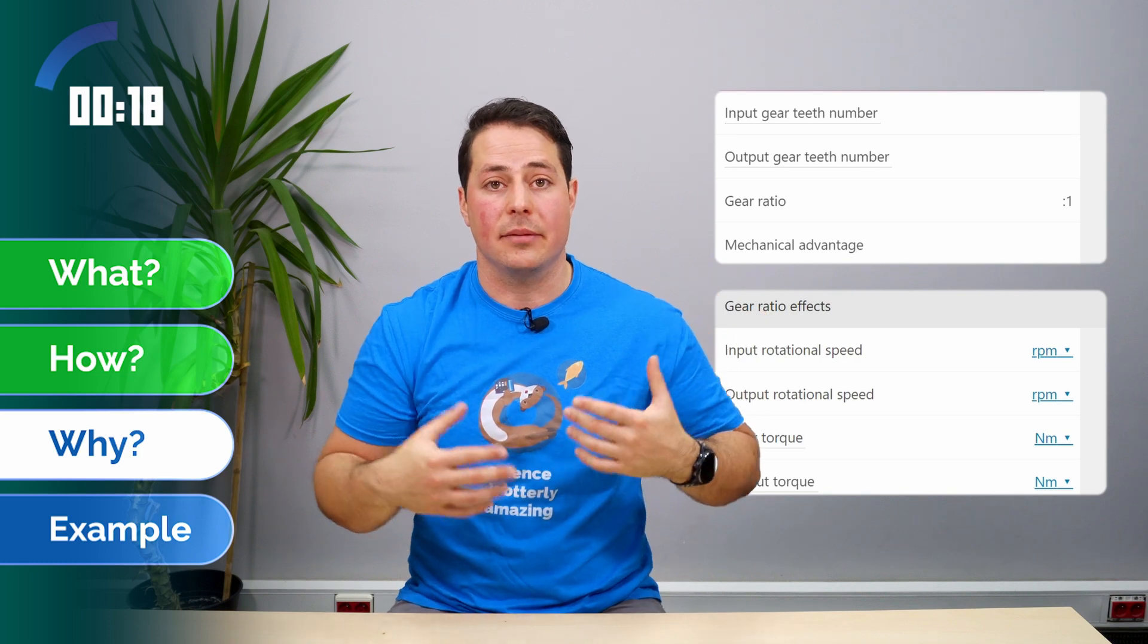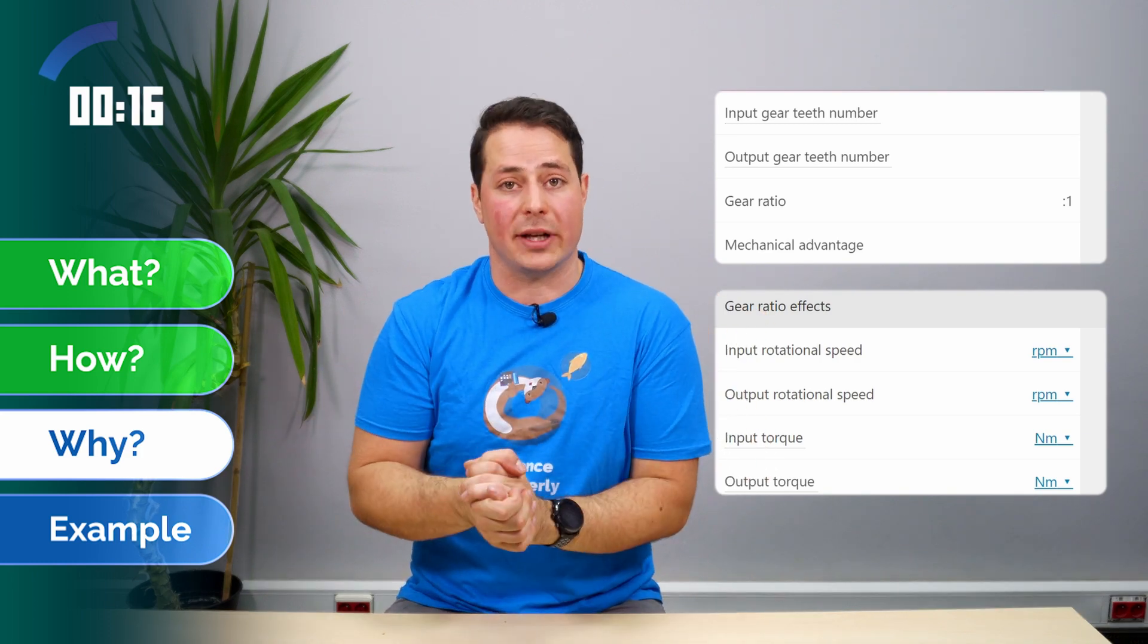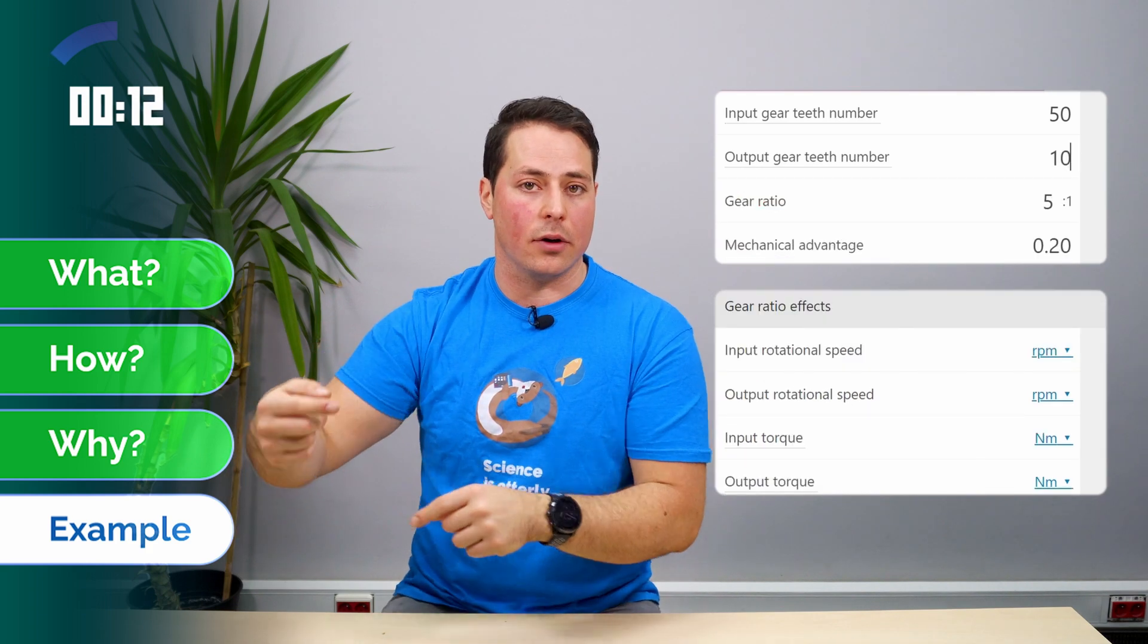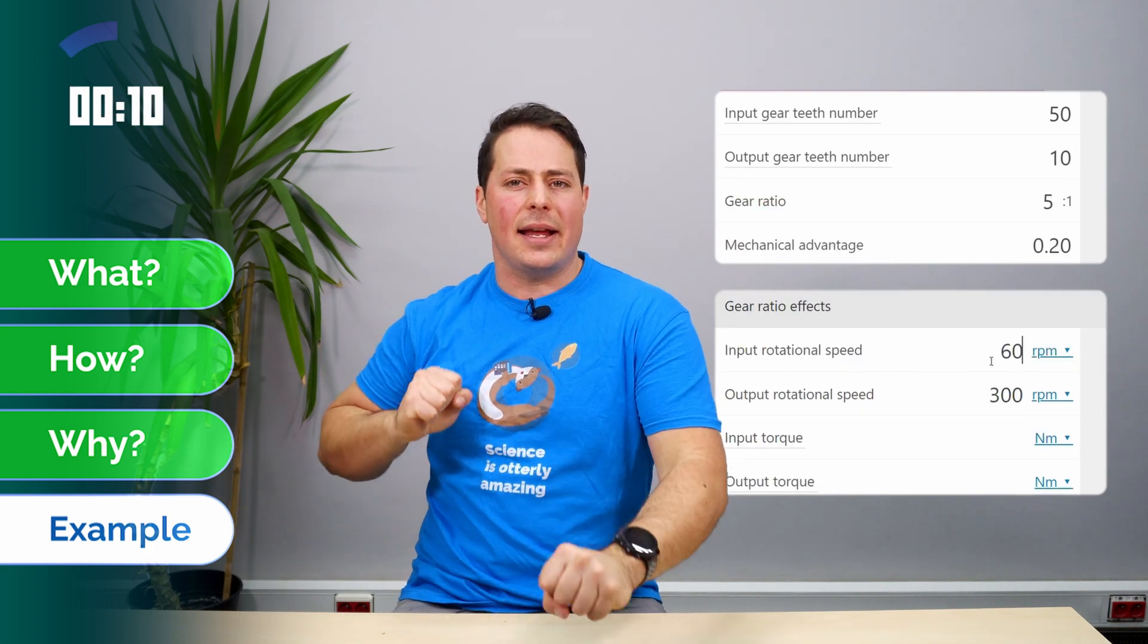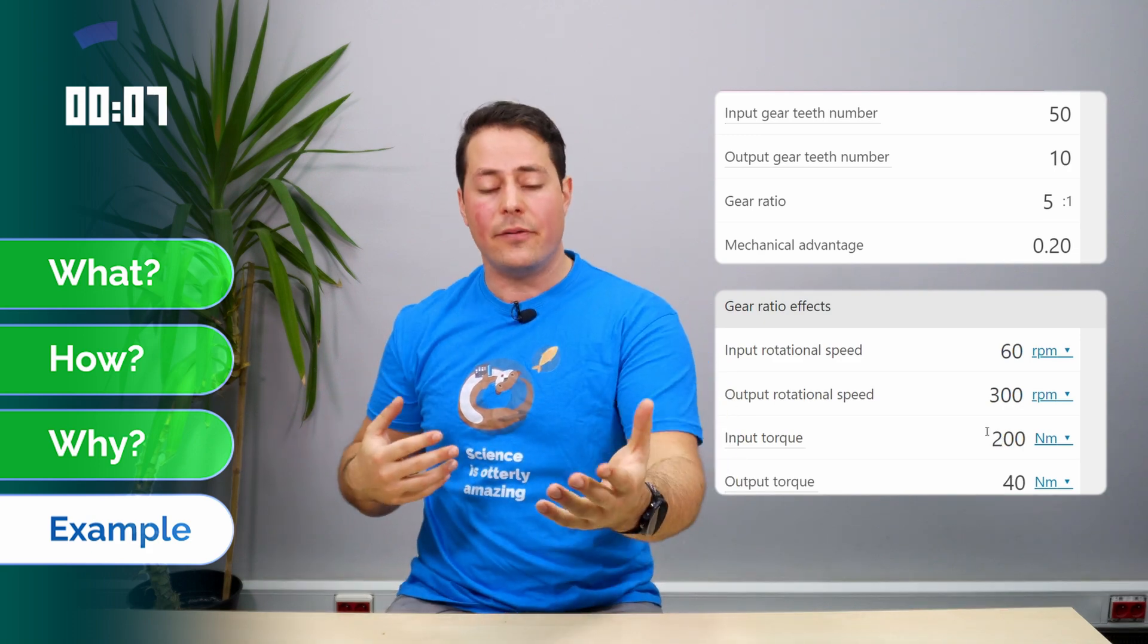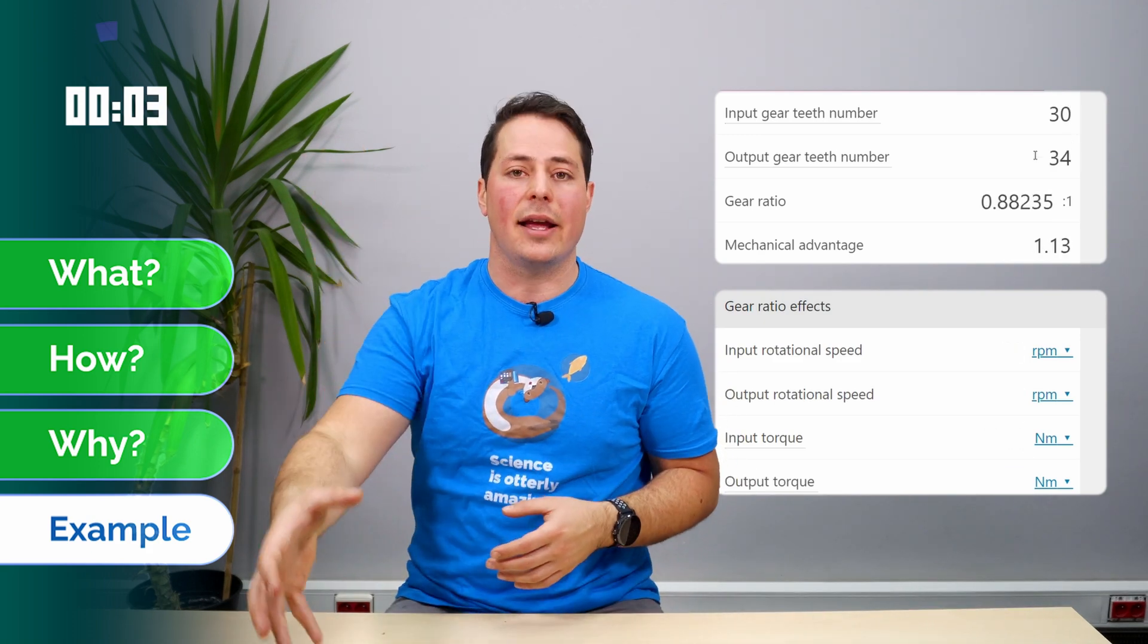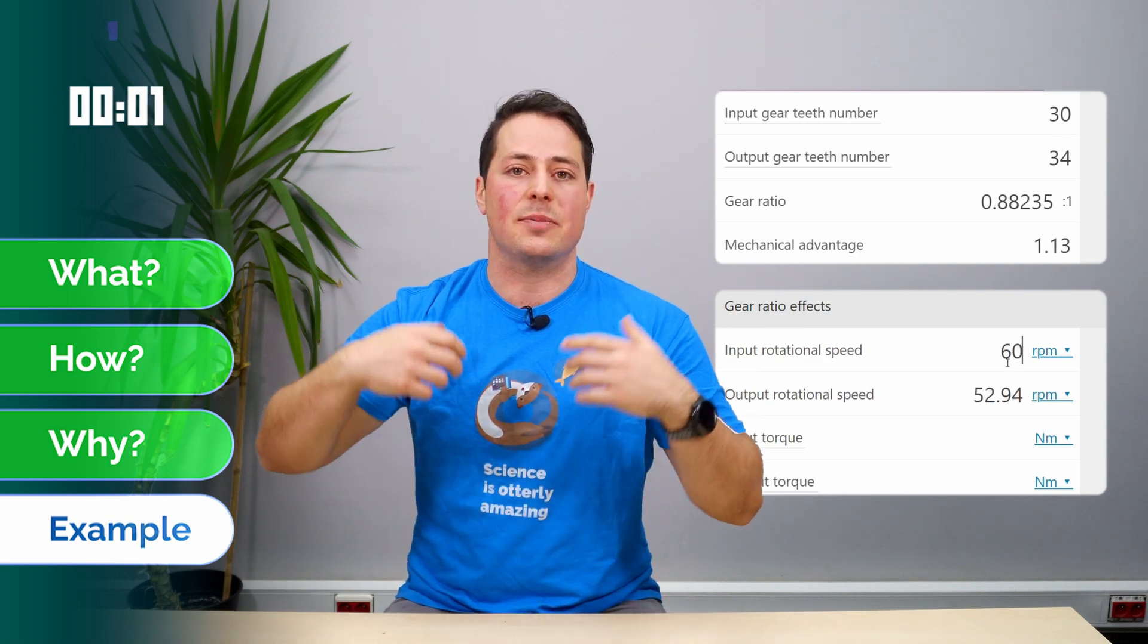It can also help us understand gear systems, like bicycles. If I'm going on a flat road, I can use a 50-tooth gear at the front and a 10-tooth at the back, and it would take a lot of effort to move the pedals, but I would go very fast. If I'm going up a slope, I need a lot of torque, so I would put a 34-tooth at the back and a 30-tooth at the front, and I would spin very fast but with a lot of torque.